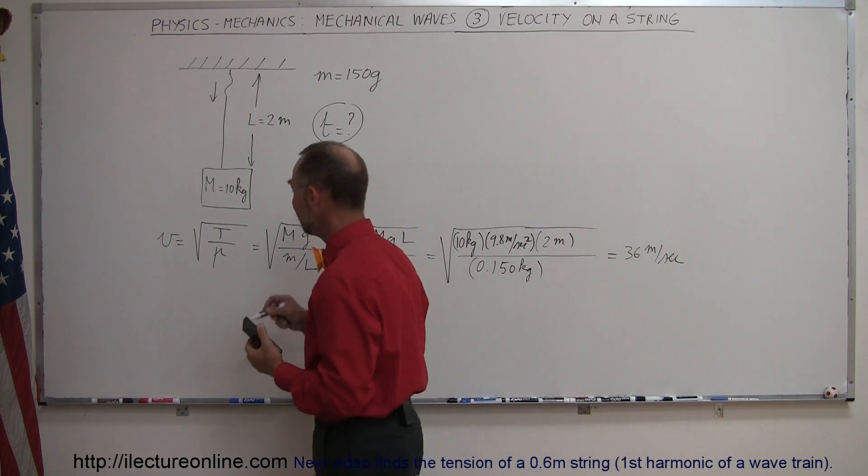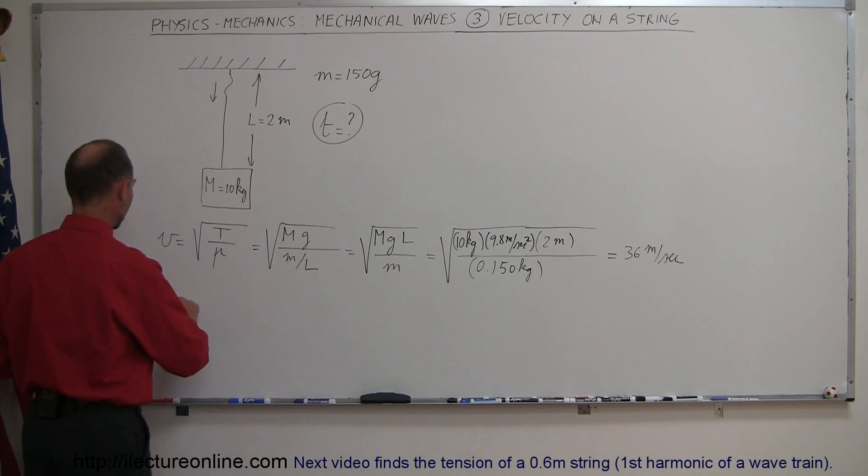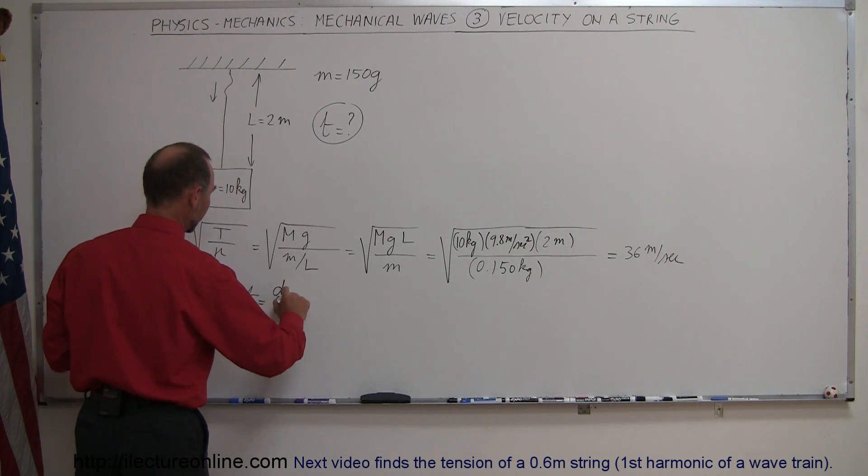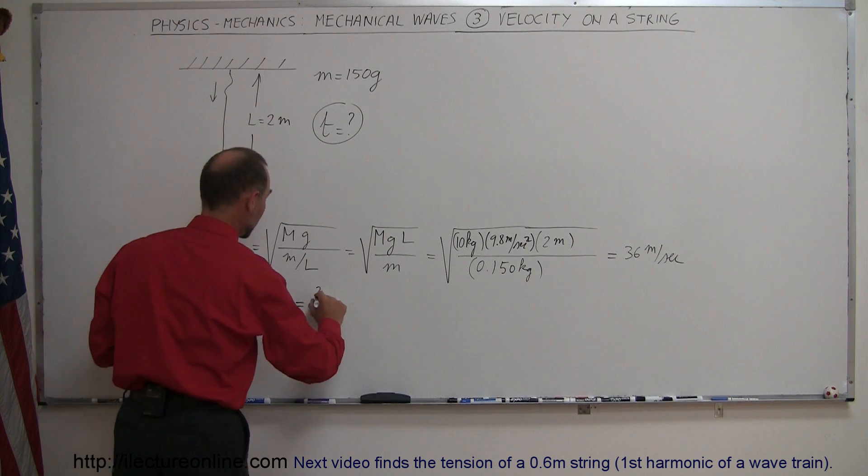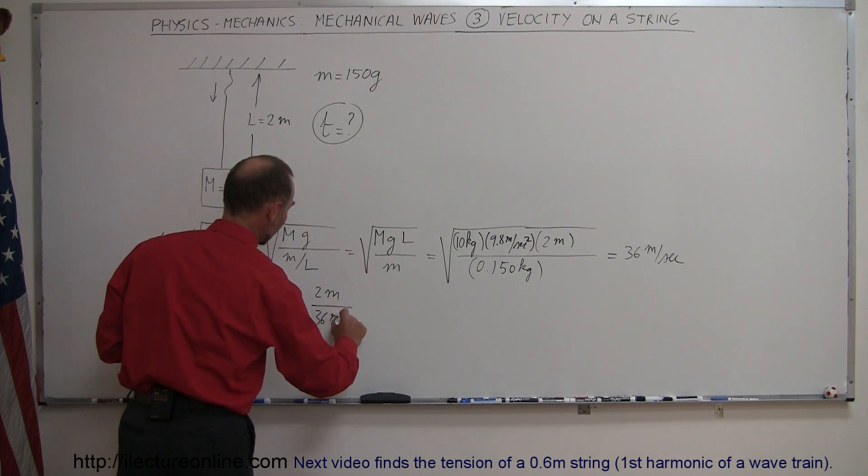All right, now to find the time, so we go back to our mechanics equations. Velocity is equal to distance divided by time, which then implies that time is equal to distance divided by velocity. The distance the wave travels is 2 meters, and the velocity is 36 meters per second.